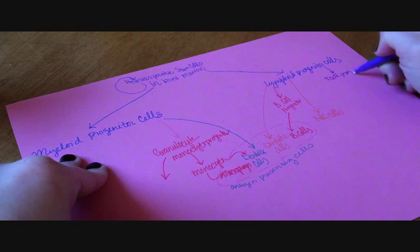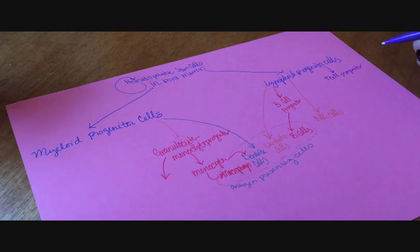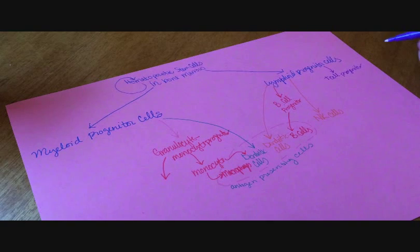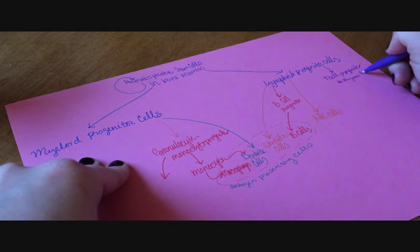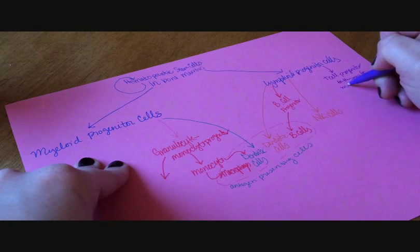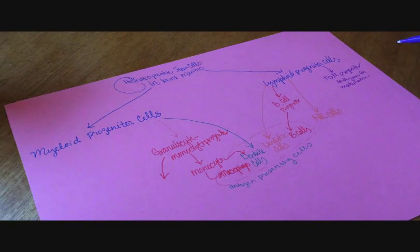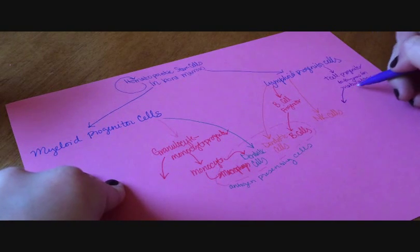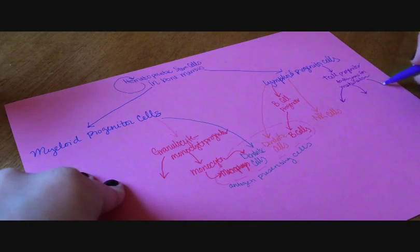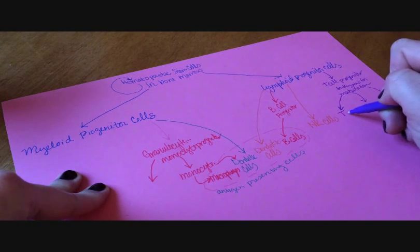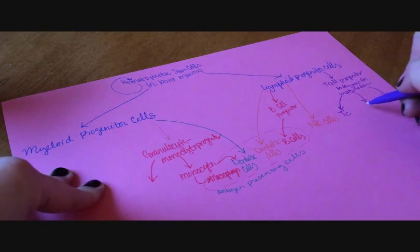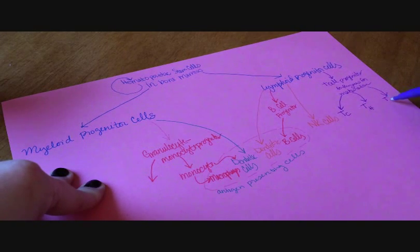Which goes to the thymus for maturation. And then differentiates into cytotoxic T-cells, helper T-cells, and regulatory T-cells.